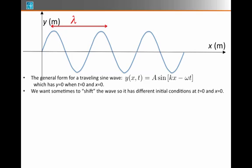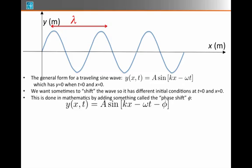But sometimes I want to be able to shift this wave so that it has different initial conditions at time t equals 0 and x equals 0. This is done in mathematics by adding what's called a phase shift phi. So I simply add it to the argument of the sine function, or subtract it in this case.